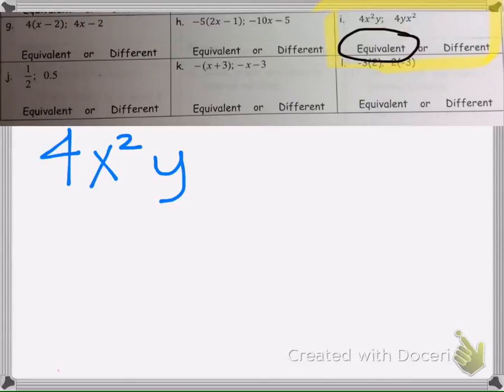Okay, so we are asked if 4x squared y is equivalent to 4yx squared. So one way to show that they are equivalent is if you know about the commutative property.